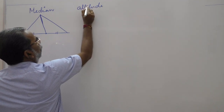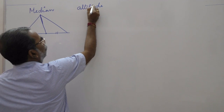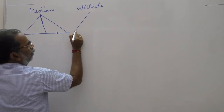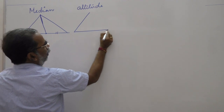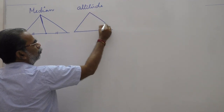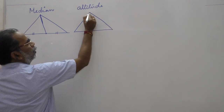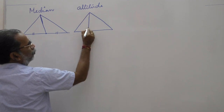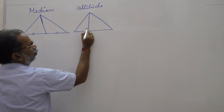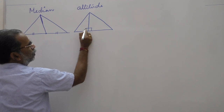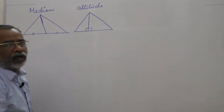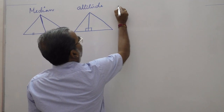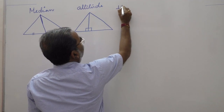Next, altitude. An altitude is a perpendicular line drawn from a vertex to its opposite side. This line is called the altitude.